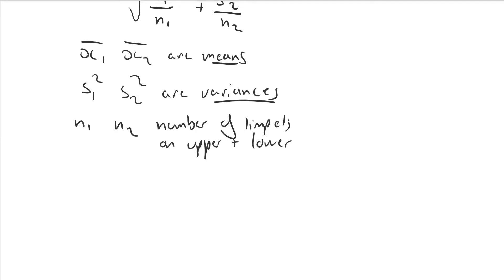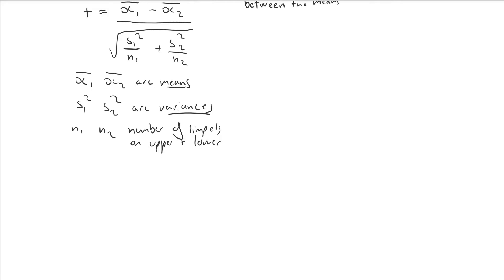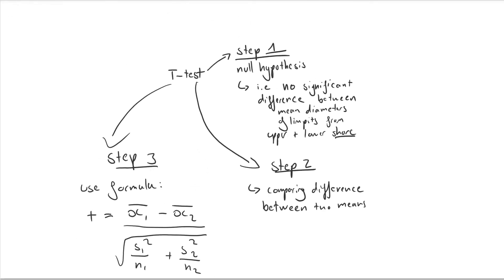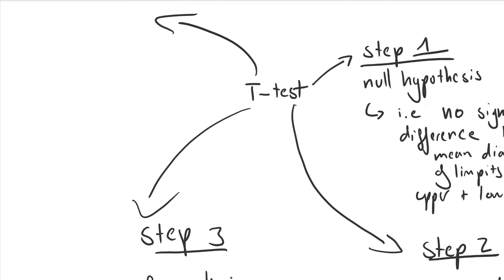So now we have got our value of t. We've calculated our value of t. We now have to interpret the test statistic. And that's going to be step four.